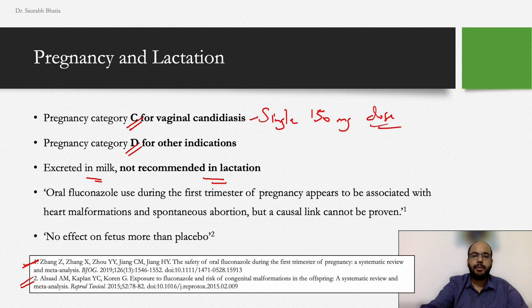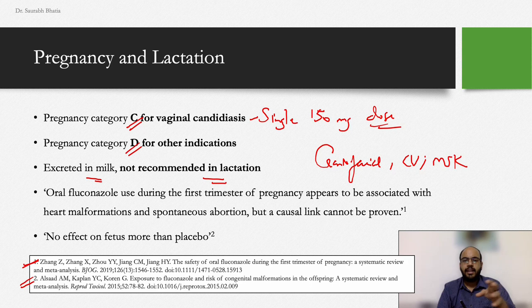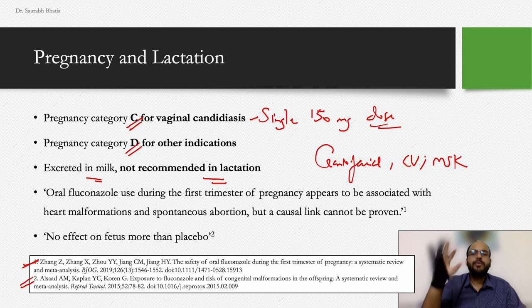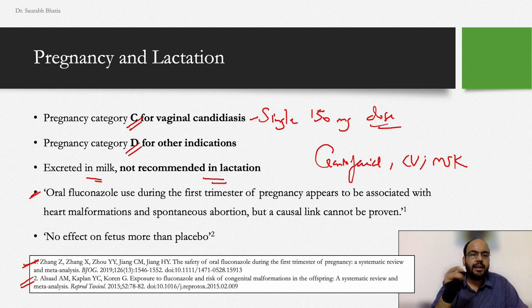There have been rare reports of craniofacial, cardiovascular, and musculoskeletal malformations with fluconazole use in pregnancy, but rates have been found to be similar to placebo. One reference states oral fluconazole use during the first trimester appears associated with heart malformations and spontaneous abortions, but a causal link cannot be proven. Overall, fluconazole is much safer in pregnant females, especially as a single 150 mg dose.